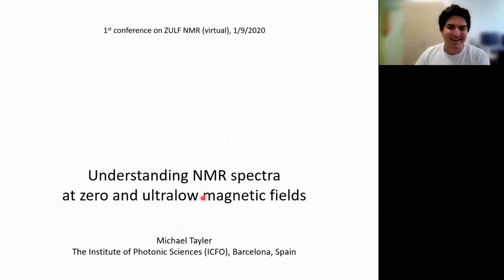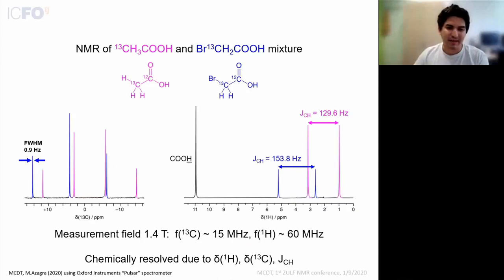With that out of the way, this tutorial is more of an opportunity to get familiar with some of the spin physics in ZULF NMR, particularly at zero field. As a motivation, I want to start with this spectrum of a mixture of two carbon-13 enriched compounds: acetic acid and bromoacetic acid.